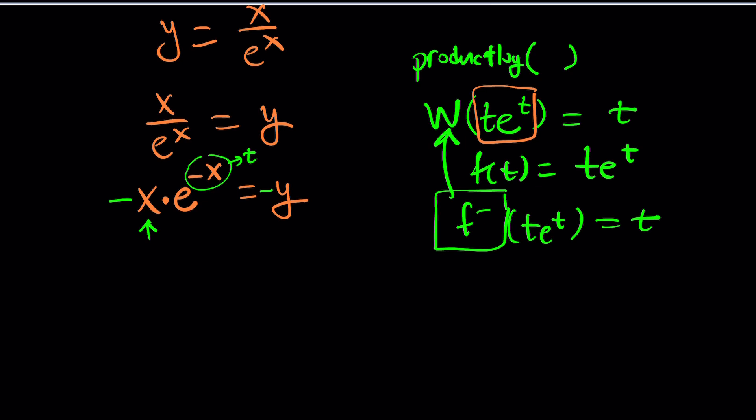Now we have te^t because -x is our t. And if you W both sides, you don't have to substitute every time. You're going to apply Lambert's W on both sides. That should give you on the left hand side -x. Because remember when you have a product like this, product log gives you the t.